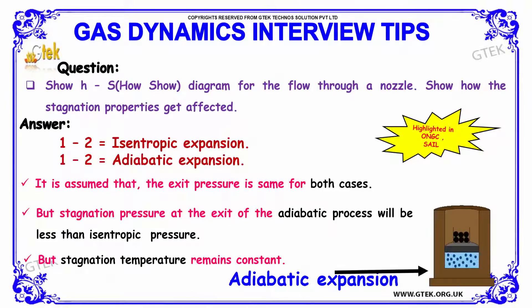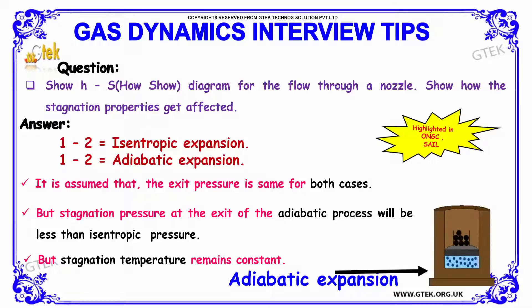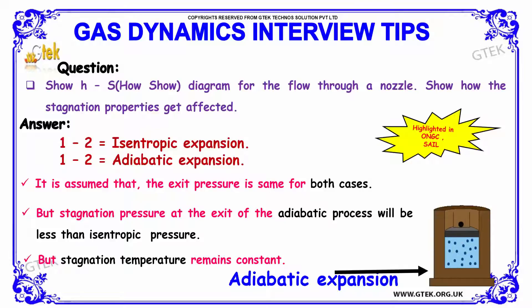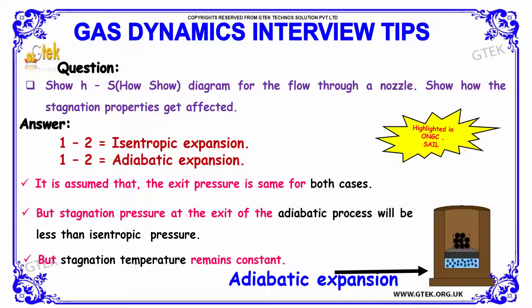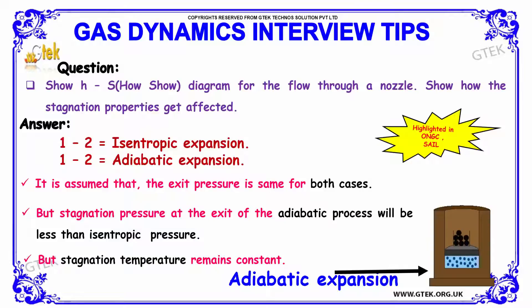Next question: show the h-s diagram for the flow through a nozzle and show how the stagnation properties are affected. The answer is: 1 to 2 represents isentropic expansion, and 1 to 2' represents adiabatic expansion. It is assumed that the exit pressure is the same for both cases. Stagnation pressure at the exit of the adiabatic process will be less than the isentropic pressure, but stagnation temperature remains constant.